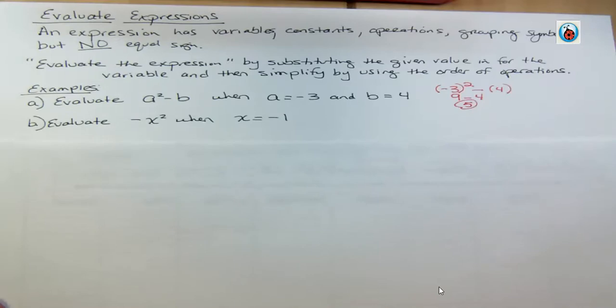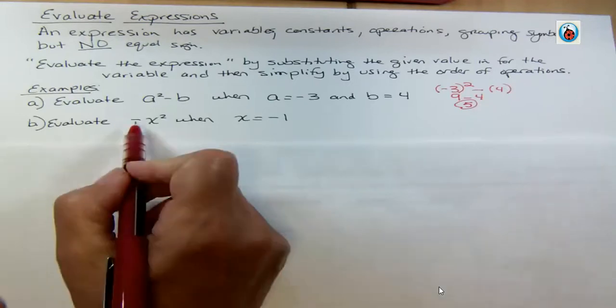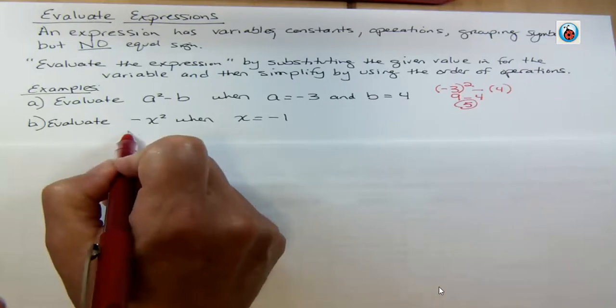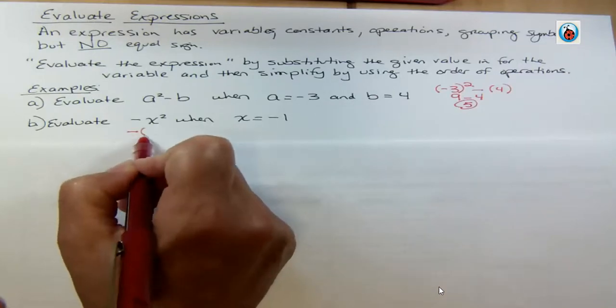For example number 2, we have negative x squared. We say evaluate negative x squared when x is negative 1. This negative has nothing to do with that negative. So when I plug into this, I'm gonna do it right under here so you can see I still have the negative, and now I'm replacing x.